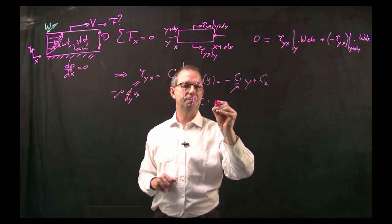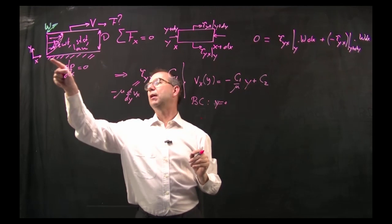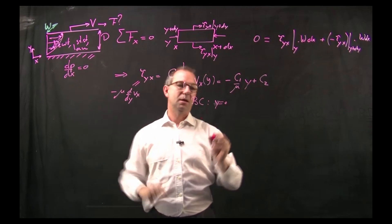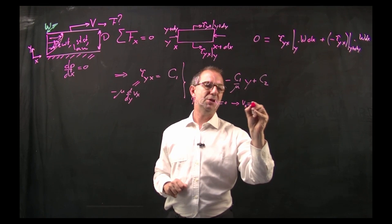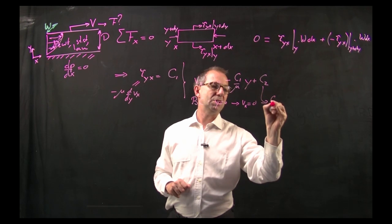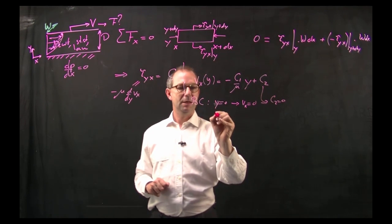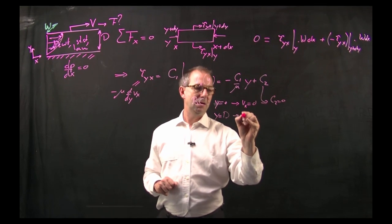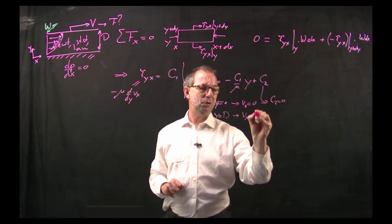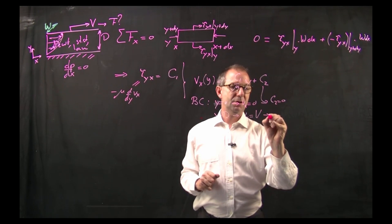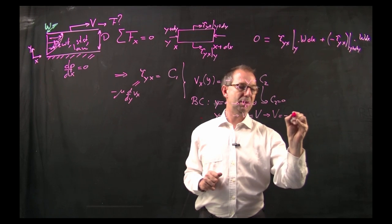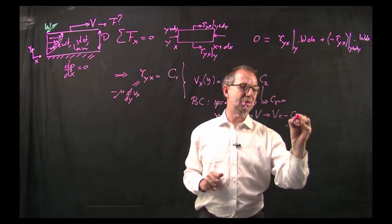Two boundary conditions needed because I have basically two integration constants and I have them at y equals 0 at the bottom, there's a stick condition on the bottom plate. So vx should be 0 and this c2 is 0. So at y equals d, vx should be equal to the velocity capital V of the plate and this v equals minus c1 mu d.